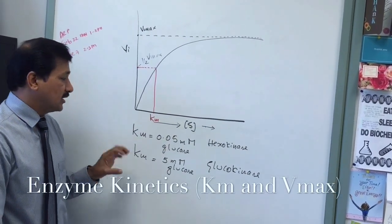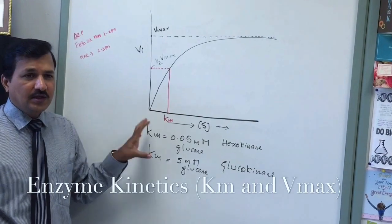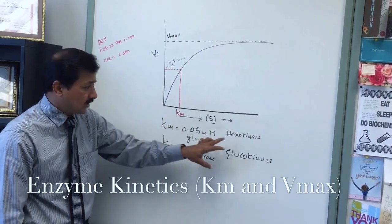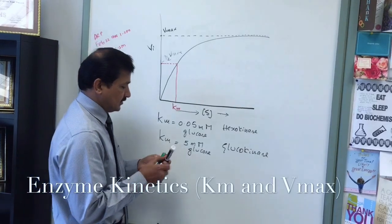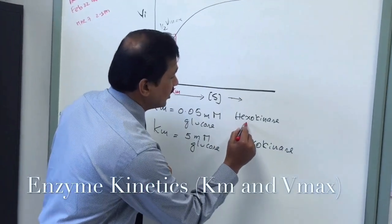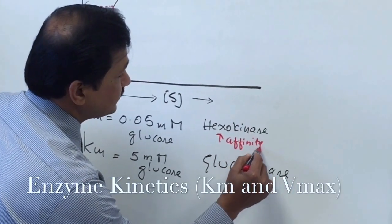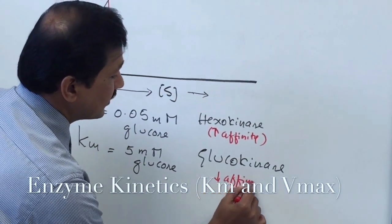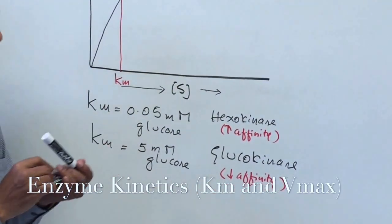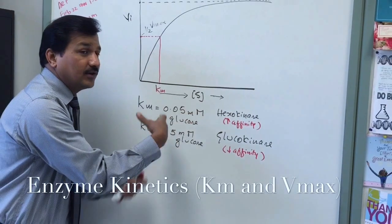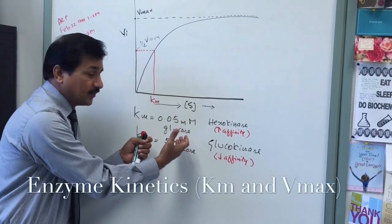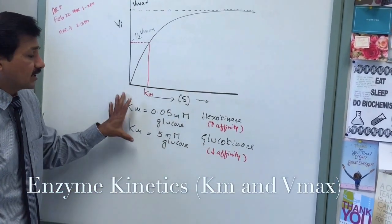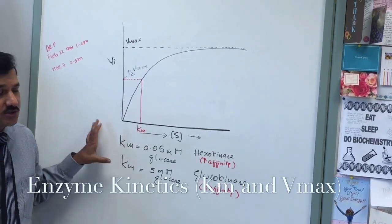KM indicates when the enzyme is going to be active. An enzyme with low KM, like hexokinase, has higher affinity for glucose and will be active even when blood glucose is low. An enzyme with high KM, like glucokinase, has lower affinity and will only be active when there is plenty of glucose present in the blood.